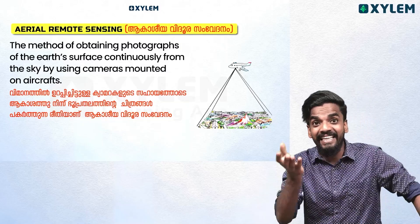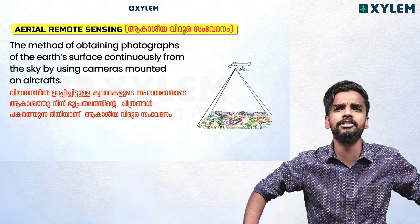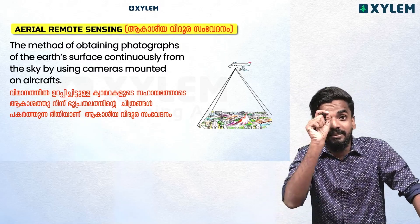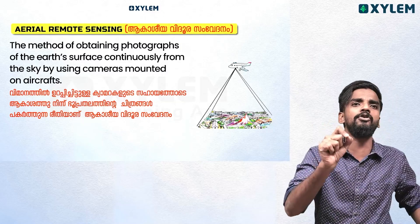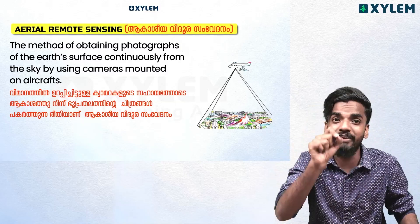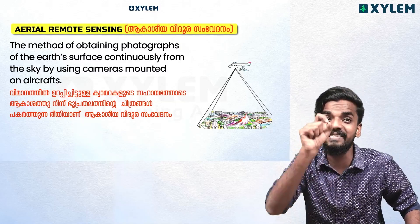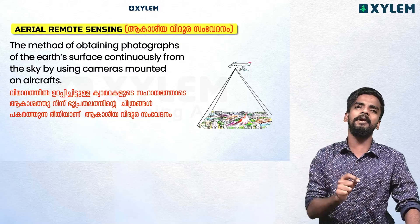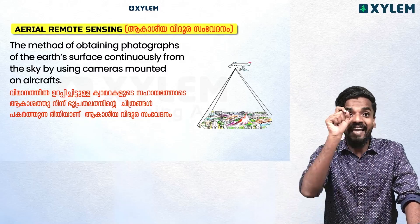Aerial remote sensing, also called Agashiya Vidura, is the method of obtaining photographs of the earth's surface continuously from the sky by using cameras mounted on an aircraft.